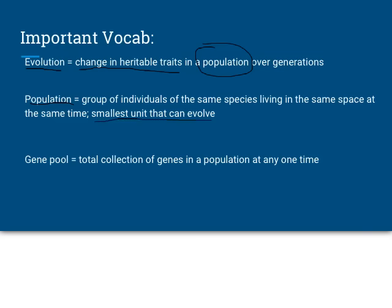A population might be a group of frogs that all live in one pond together, and there might be a second population of frogs somewhere else in that same state. When we say a population is the smallest unit that can evolve, it means populations can change their genetic makeup — no one individual can. A third vocab word is gene pool, which is the total collection of genes in a given population.